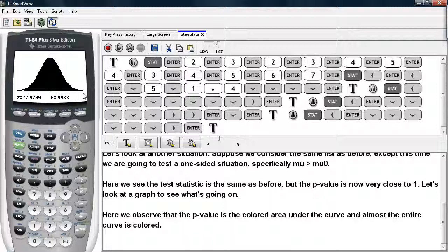this thing is almost entirely shaded. So it starts shading at negative 2.47, and it stops shading way off in the distance. So we have almost 1 for the p-value, as represented here by the shaded region under the curve.